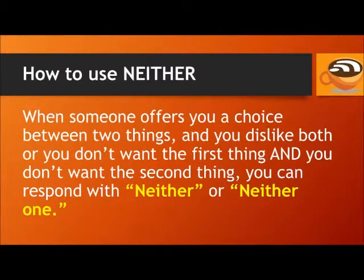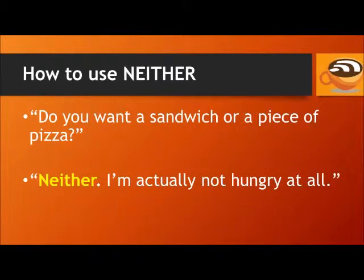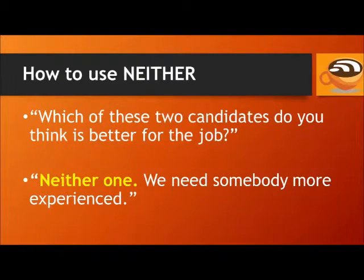When someone offers you a choice between two things and you dislike both — or you don't want the first thing and you don't want the second thing — you can respond with 'neither' or 'neither one.' For example, do you want a sandwich or a piece of pizza? Neither — I'm actually not hungry at all. Which of these two candidates do you think is better for the job? Neither one — we need somebody more experienced.